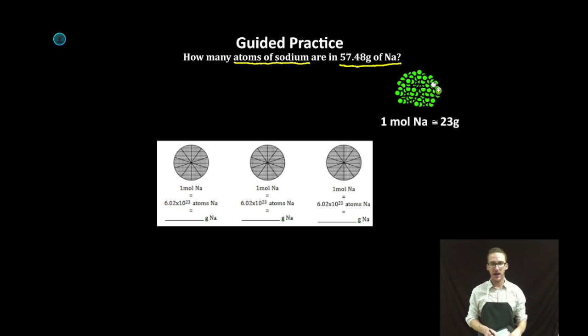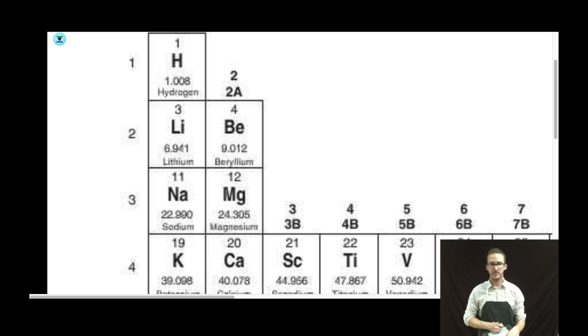Again I've got my model of what one mole of sodium is going to look like stacked here in this pile, Avogadro's number of sodium atoms. The mass of this one mole of sodium, approximately 23 grams. Where's that coming from you ask? Why the periodic table of course.